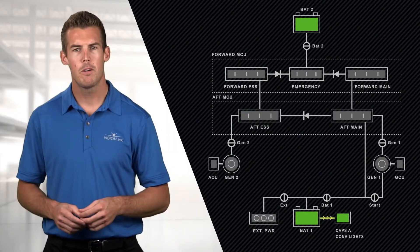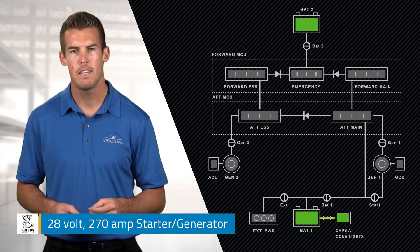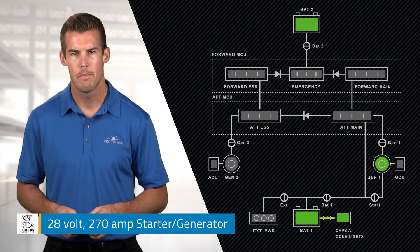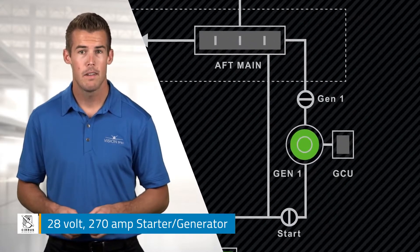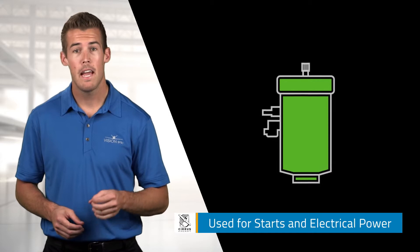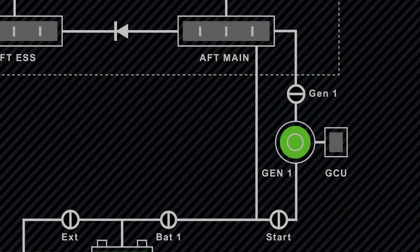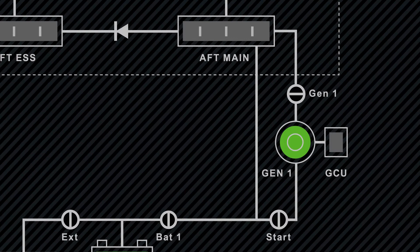The primary source of electrical power is a 28-volt, 270-amp starter generator. As the name implies, this accessory functions as both a starter and as a producer of electrical power. However, it cannot do both at the same time.